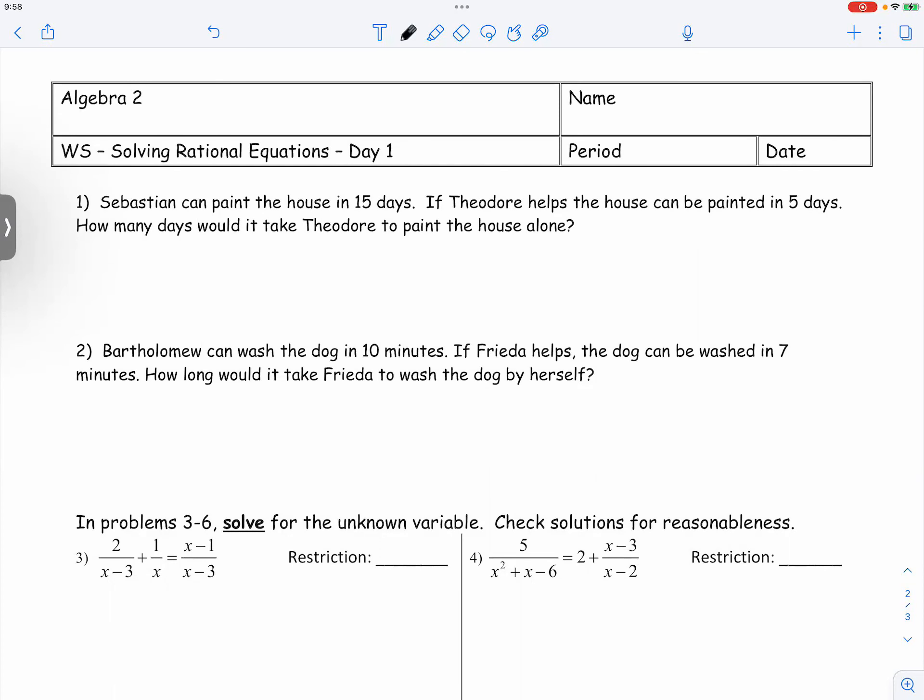So for the first question, Sebastian can paint the house in 15 days. And if Theodore helps, the house can be painted in five days. How many days would it take Theodore to paint the house alone?